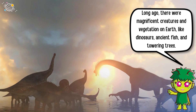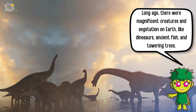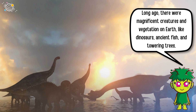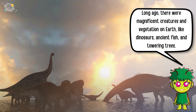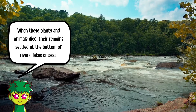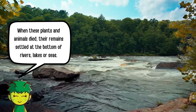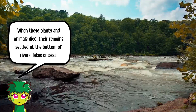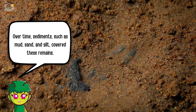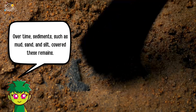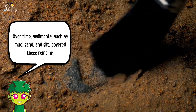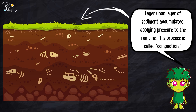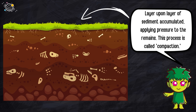Long ago, there were magnificent creatures and vegetation on earth, like dinosaurs, ancient fish, and towering trees. When these plants and animals died, their remains settled at the bottom of rivers, lakes, or seas. Over time, sediments such as mud, sand, and silt covered these remains, with layer upon layer of sediment accumulating and applying pressure to the remains.